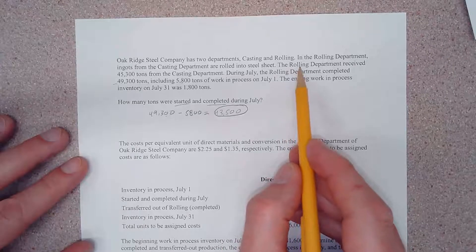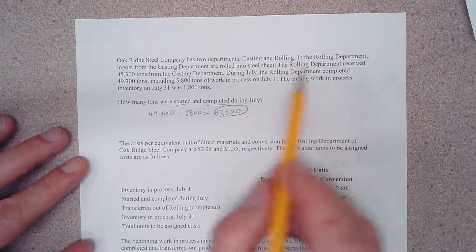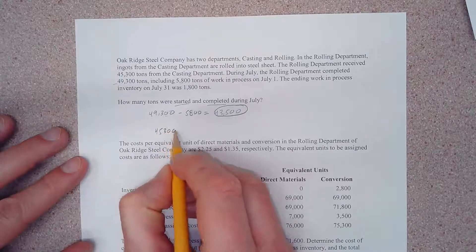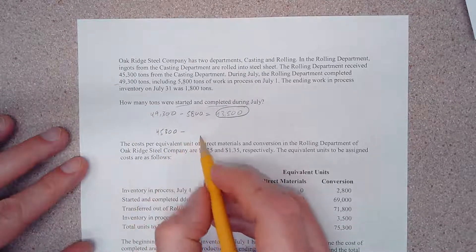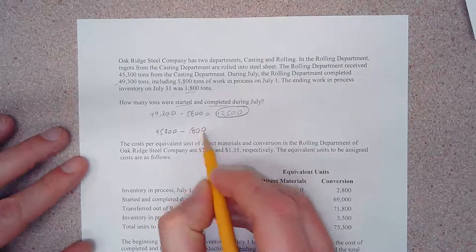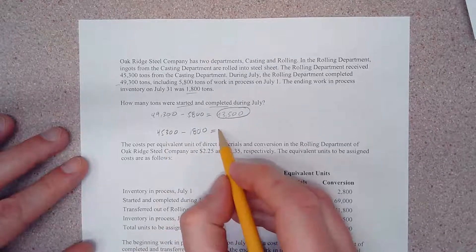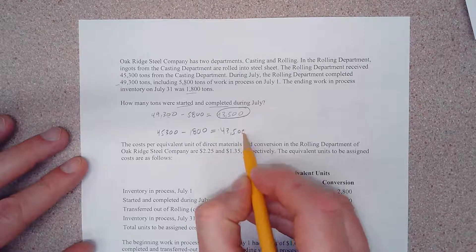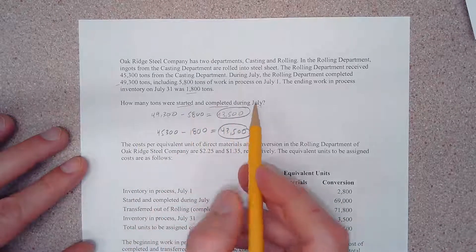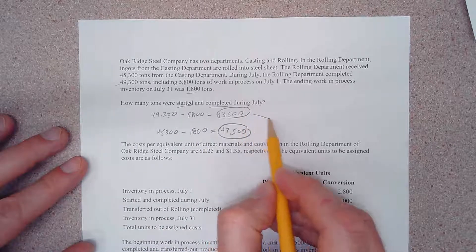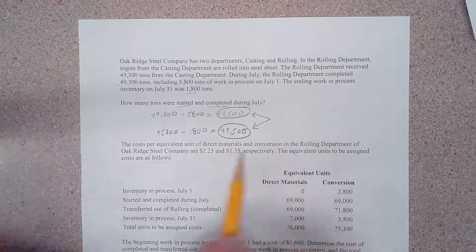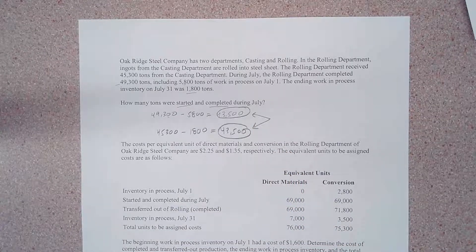The rolling department received 45,300 tons, and all but 1,800 of those were completed, so we execute that equation and come up with the same answer. Either way you look at it, the answer is 43,500 tons started and completed in the month of July.